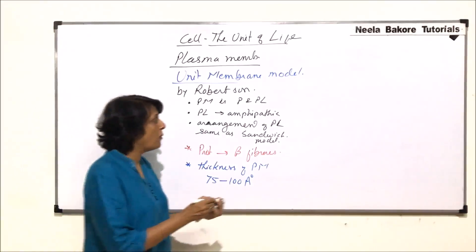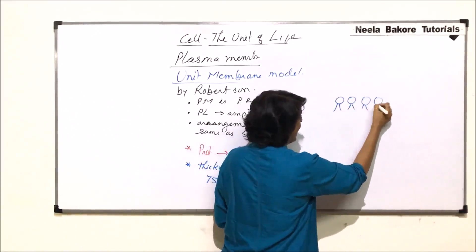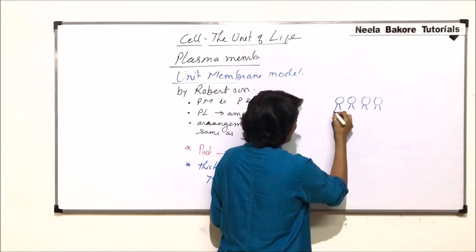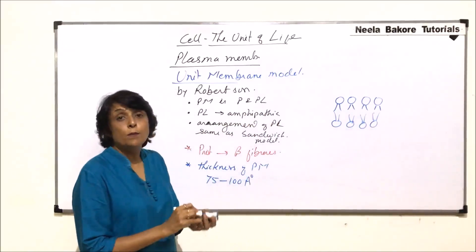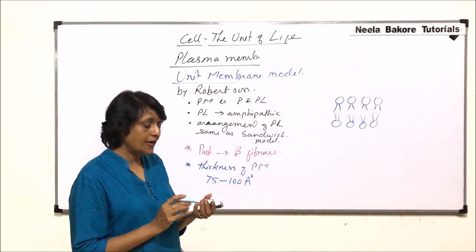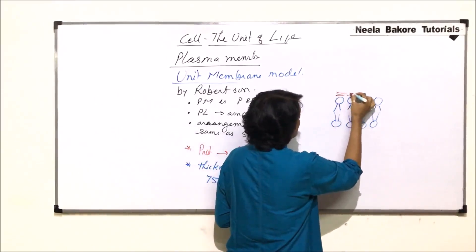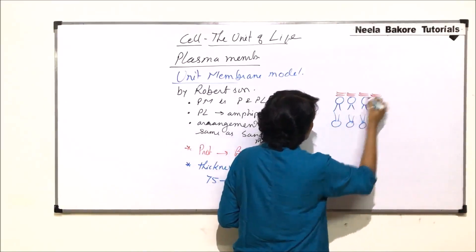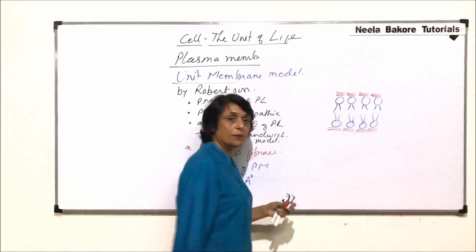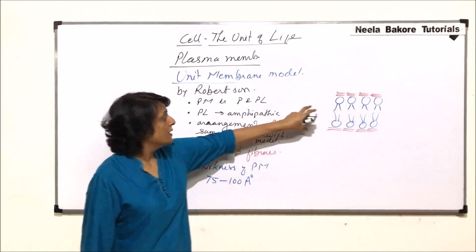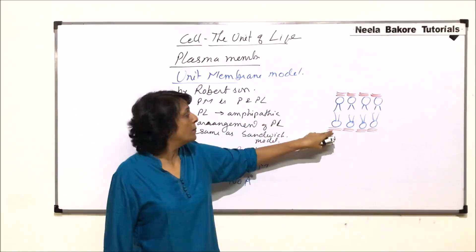If we draw the model, the arrangement of the phospholipid bilayer is the same as mentioned by Danielli-Davson and Robertson. Proteins are on either side, but instead of globular proteins, now we draw fibrous proteins — these are the thread-like proteins. The phospholipid bilayer is in the middle, and on either side is the protein layer.